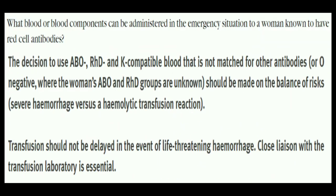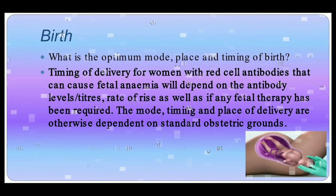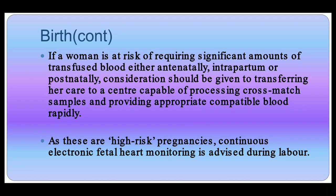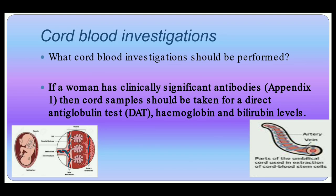In emergency situations, the decision should be made on the balance of risks and benefits, and transfusion should not be delayed in the event of life-threatening hemorrhage. The timing of delivery for women with red cell antibodies that can cause fetal anemia will depend upon antibody level or titer and rate of rise, as well as fetal therapy already required. If the woman is at risk of requiring significant transfusion, it is better to transfer her care to a center capable of processing cross-match samples and providing compatible blood rapidly. Continuous electronic fetal heart rate monitoring is advised during labor in these high-risk pregnancies.